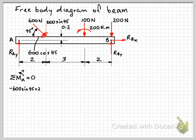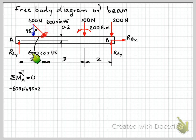Before continuing, I want to point out that I see a lot of people draw the components of the force off to the side or up along the force line. In my opinion that's not good practice, because it looks like the distance between that component and point A is something less than 2. But the moment effect of that component is actually the component acting at its correct position times 2. So try to avoid drawing your components like that — instead draw them so that they maintain their correct line of action.